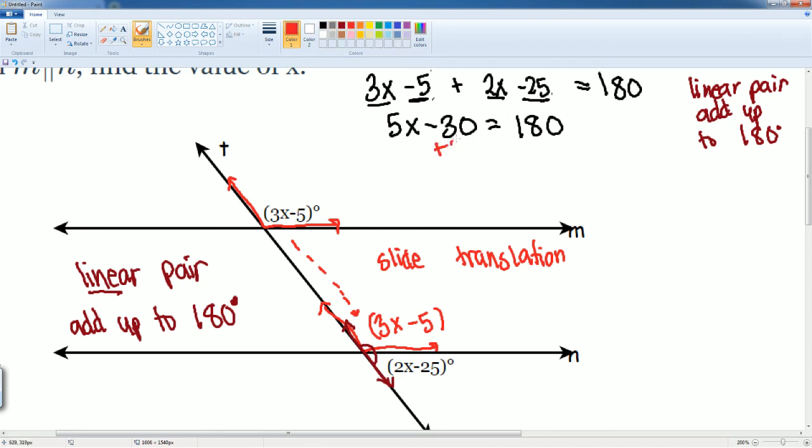I'm gonna add 30 to both sides. I get 5x is equal to 210. Divide by 5 to both sides. I now get x is equal to 210 divided by 5, that gets me 42.